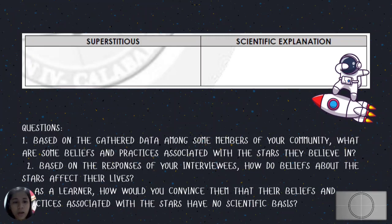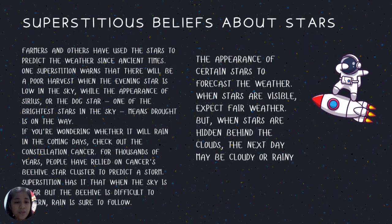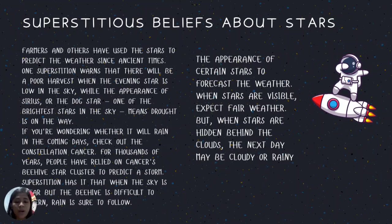An example answer: Farmers and others have used the stars to predict the weather since ancient times. One superstition warns there will be a poor harvest when the evening star is low in the sky, while the appearance of Sirius — the Dog Star, one of the brightest stars — means drought is on the way. People have also relied on the constellation Cancer's Beehive star cluster to predict storms — when the sky is clear but the Beehive is difficult to discern, rain is sure to follow. When stars are visible, expect fair weather; when hidden behind clouds, the next day may be cloudy or rainy.